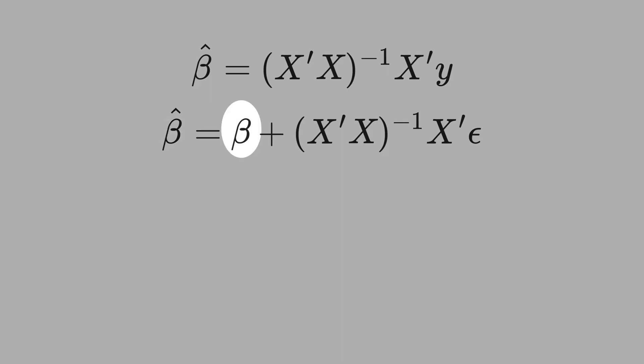We can write beta hat as beta, the covariance matrix of x inverse, and the covariance between x and the error term.